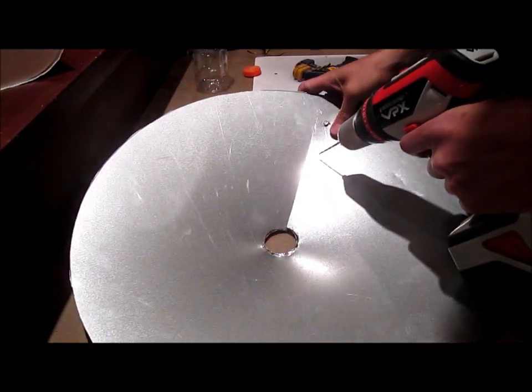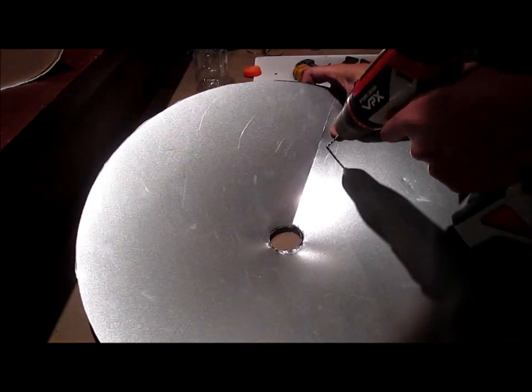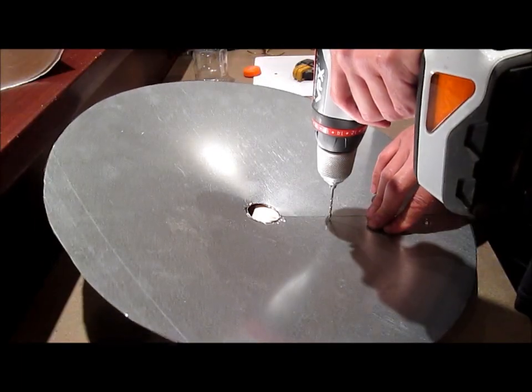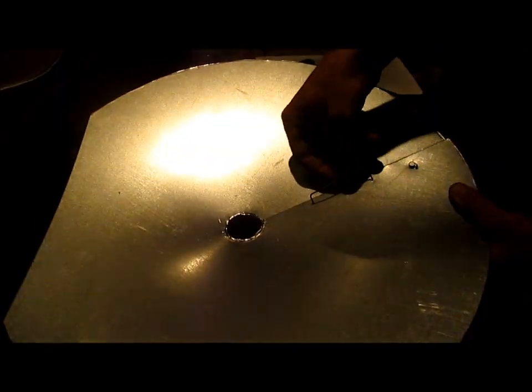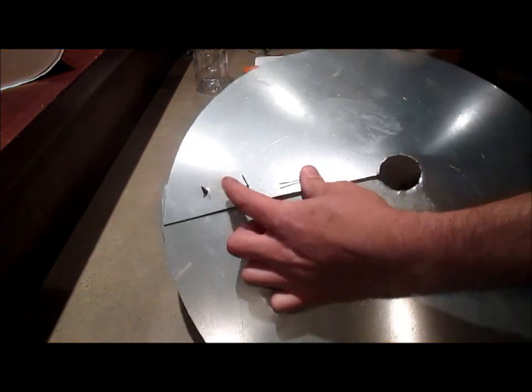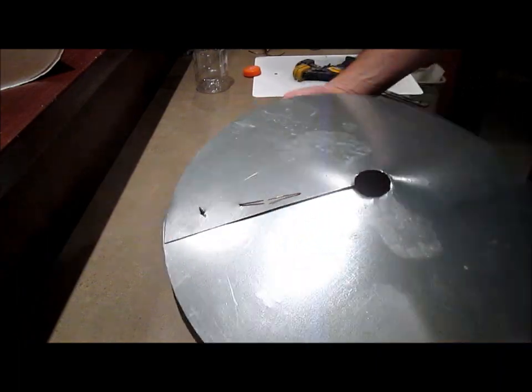If you don't have those sheet metal screws you can simply drill through with a drill bit in a few places. And weave a piece of wire through. And bend it on the back side to hold everything together.